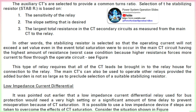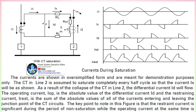Linear couplers, which have no iron in their core, can be used to overcome the problems caused by CT saturation. These devices have a linear characteristic that produces a voltage in the secondary that is directly proportional to the primary current. For an external fault, the sum of the voltages will be equal to zero or very nearly so, whereas the voltages all add together for an internal fault, thus producing sufficient voltage to operate the relay. However, linear couplers have not been widely accepted because of their special characteristics and limited application.